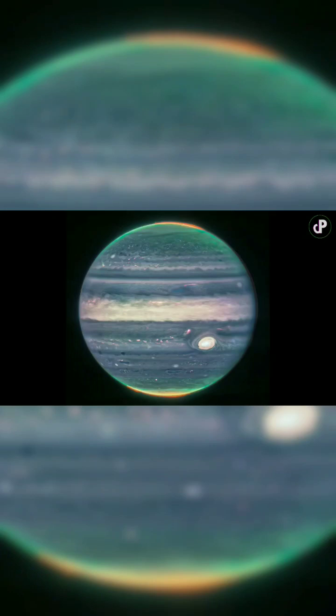You can see the beautiful auroral glows at the North Pole and the South Pole. These auroras extended to the high altitudes, above the northern and southern poles of Jupiter.